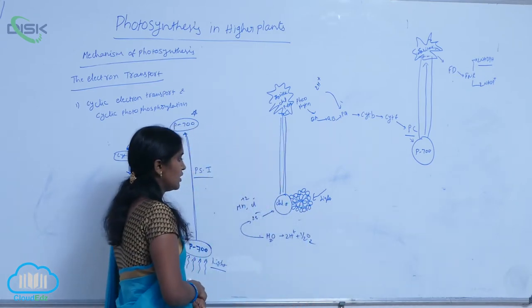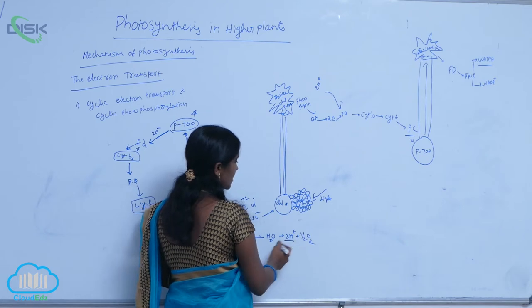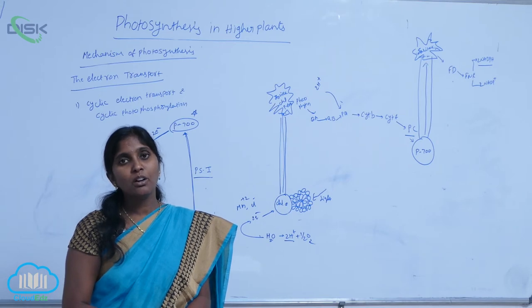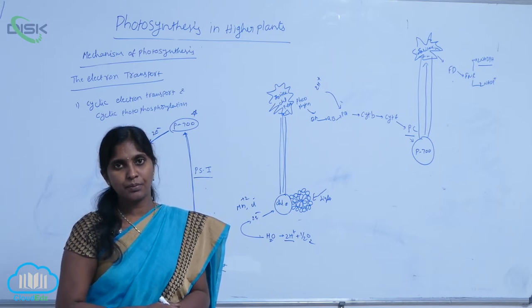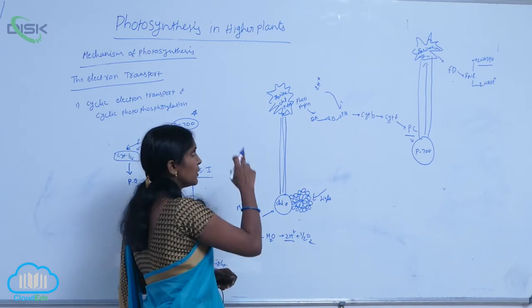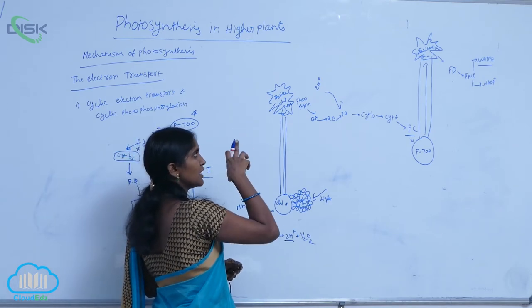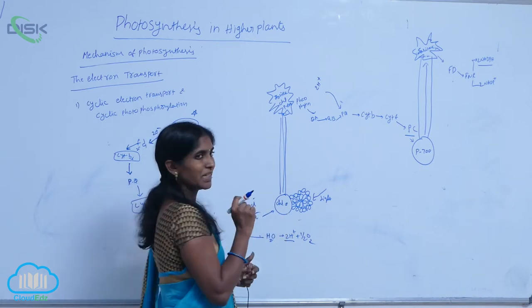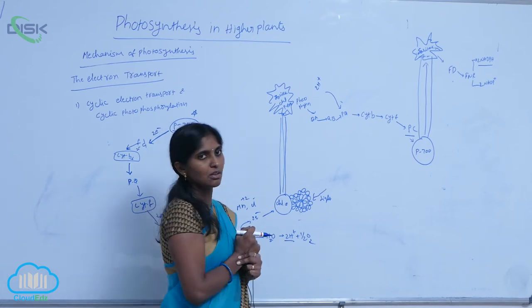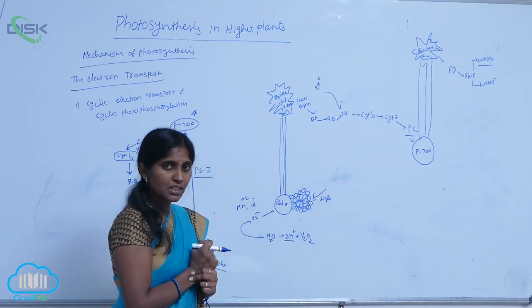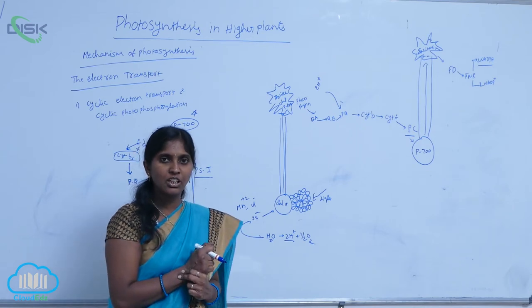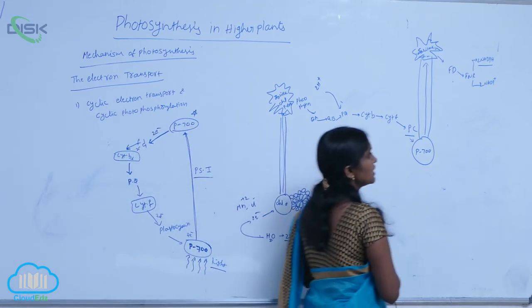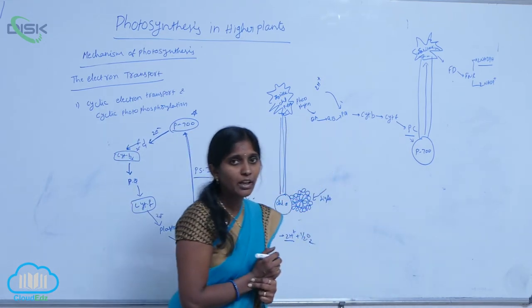Here the protons are released. The released protons are translocated into the lumen of thylakoids. Totally, if you observe the electron transportation shape-wise, it looks like the alphabet Z. That is why the scheme is called the Z scheme. In the Z scheme, there is production of ATP as well as NADPH2. Here NADPH is released. How is ATP released?